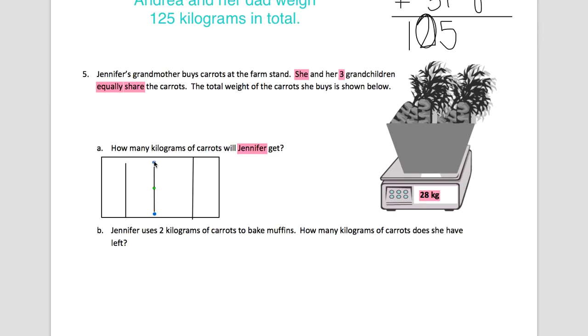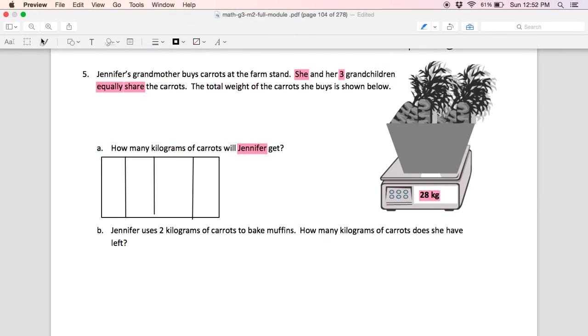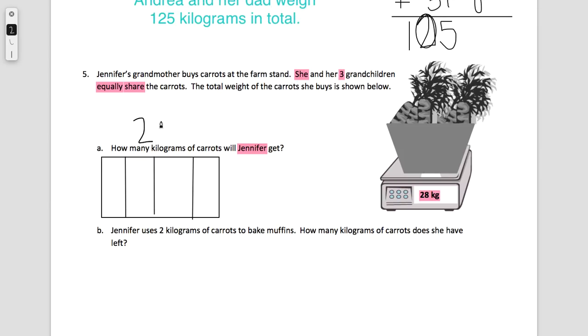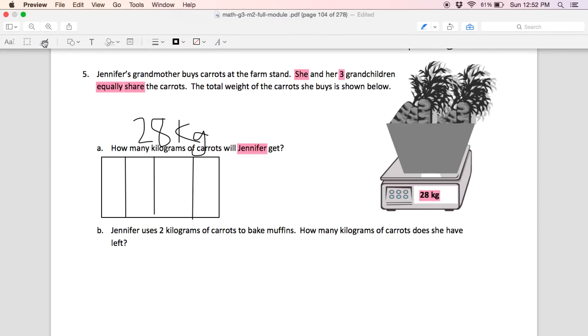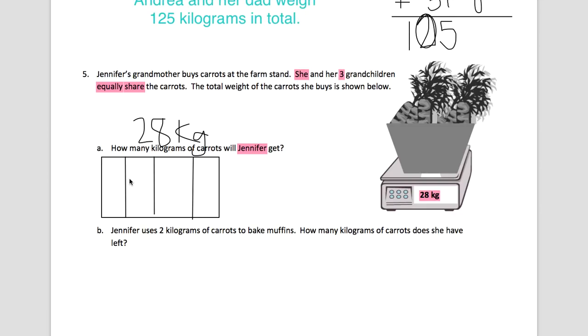And then I'm going to just extend them so they fill up the whole box. I know that there is a total of 28 kilograms, and I know that four people are going to share them. So I can create a sentence with what I know. I know my groups and I know my total. I don't know my size.